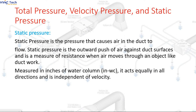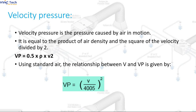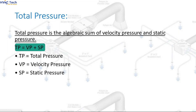Total pressure, velocity pressure, and static pressure. Static pressure is the pressure that causes air in the duct to flow. It is the outward push of air against duct surfaces and is a measure of resistance when air moves through an object like ductwork. Measured in inches of water column (in WC), it acts equally in all directions and is independent of velocity. Velocity pressure is the pressure caused by air in motion. It equals the product of air density and the square of the velocity divided by 2: Vp = 0.5 × ρ × V². Total pressure is the algebraic sum of velocity pressure and static pressure: TP = Vp + SP.